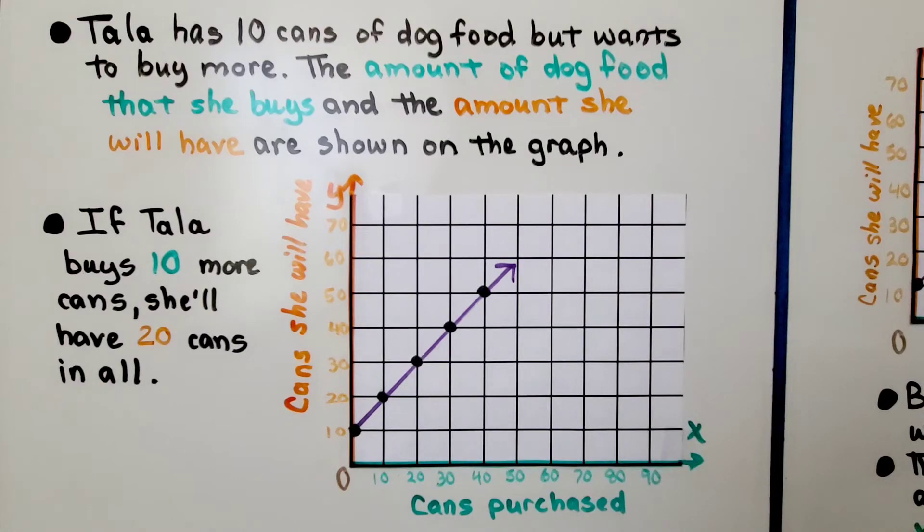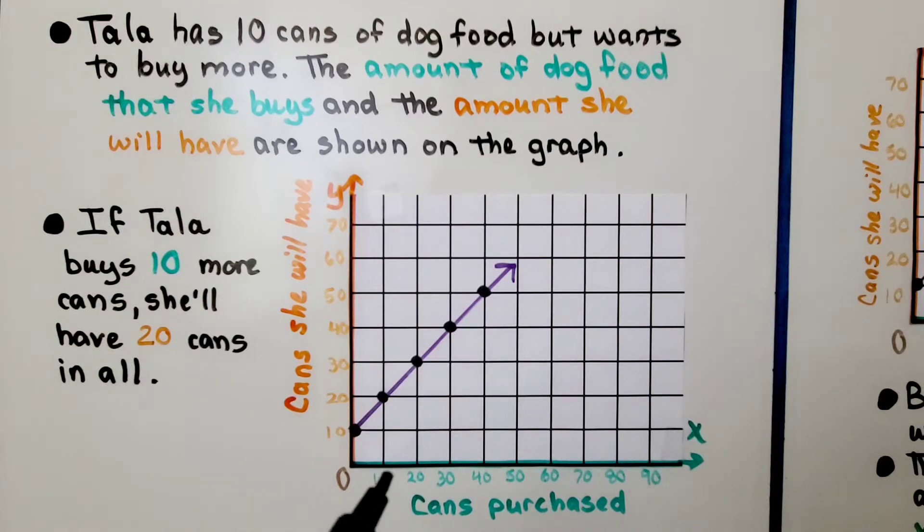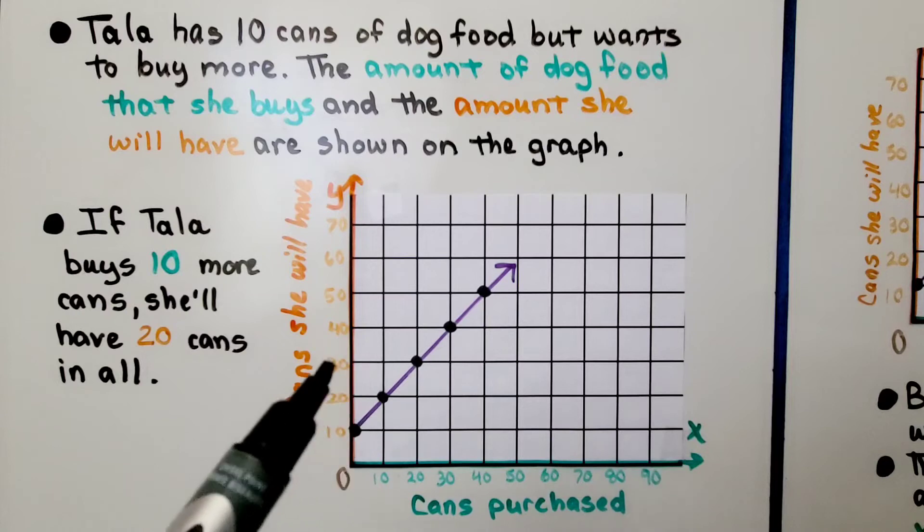Tala has 10 cans of dog food but wants to buy more. The amount of dog food that she buys and the amount she will have are shown in the graph. If she buys 10 more, she'll have 20. She started with 10. So if she purchases 10 more, she will then have 20. And if she purchases another 10, she'll have 30.